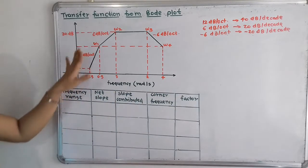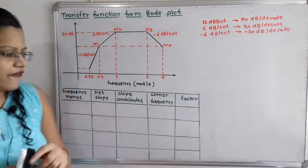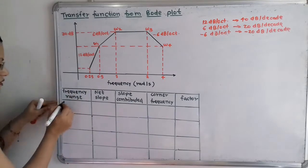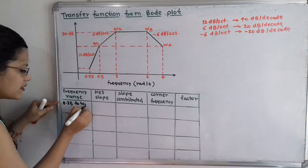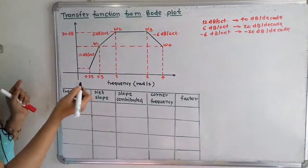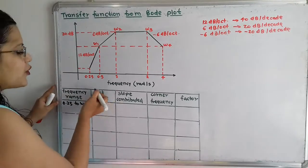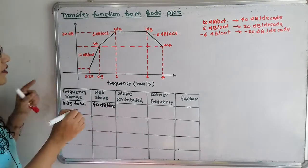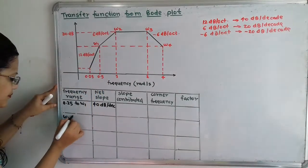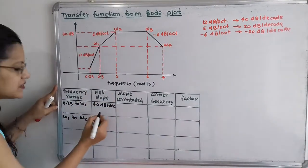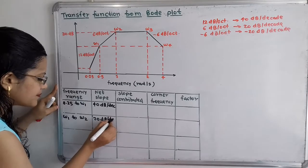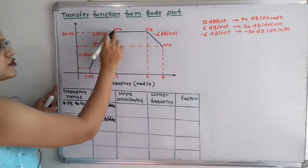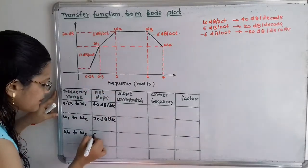Now we will fill up these columns with reference to the diagram. First frequency range: 0.25 up to omega 1, with net slope 40 dB per decade. Next is omega 1 to omega 2, with net slope plus 20 dB per decade. Next is omega 2 to omega 3: because of the horizontal line, it is 0 dB per decade.